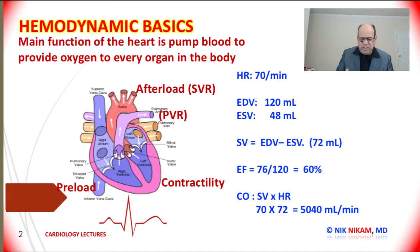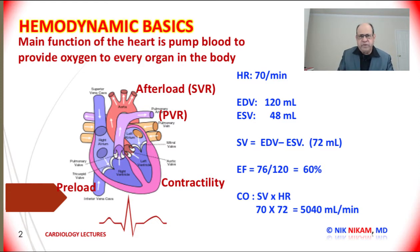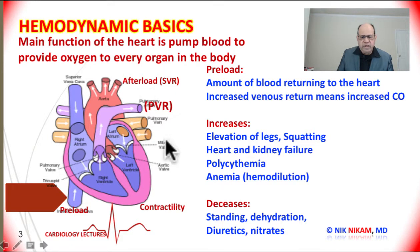Cardiac output is equal to stroke volume multiplied by heart rate, expressed as liters per minute. It is very important to understand the terminology we use when expressing various parameters in cardiac hemodynamics. At the beginning I talked about the three factors that determine cardiac function: namely the preload, afterload, and contractility.